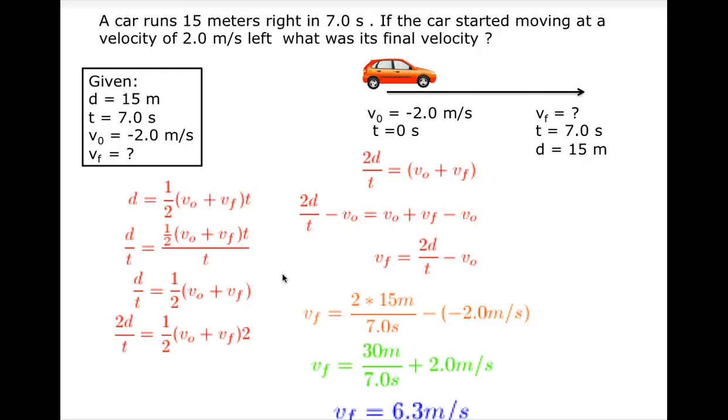A car runs 15 meters right in 7.0 seconds. If the car started moving at a velocity of 2.0 meters per second left, what was its final velocity?